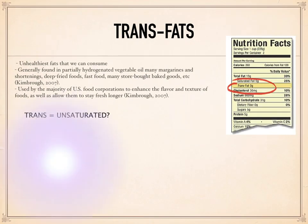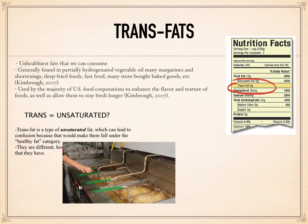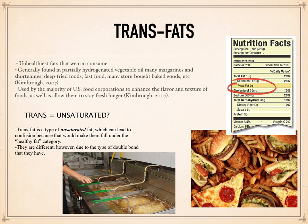Trans fats are utilized by the majority of United States food corporations to enhance the flavor and texture of foods, as well as to allow them to stay fresh longer. Trans fats are easy to use, inexpensive to produce, and last a long time. They give foods a desirable taste and texture. They are the unhealthiest fats that we can consume, and they are generally found in partially hydrogenated vegetable oil, many margarines and shortenings, deep fried foods, fast foods, and many store-bought baked goods, among many others. Something interesting to note is that trans fat is actually a type of unsaturated fat, which may lead to confusion because they fall under the healthy fat category. They are different due to the type of double bonds that trans fats have, which we will look at momentarily.